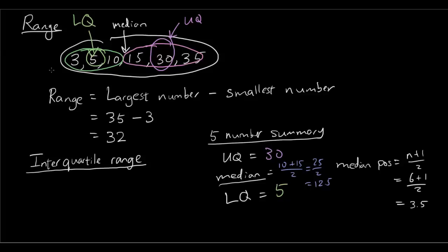So once we have the upper quartile and the lower quartile, the interquartile range, which we're going to denote as IQR, is simply the upper quartile minus the lower quartile. So we have 30 minus 5, which is 25. That is the interquartile range.